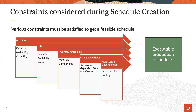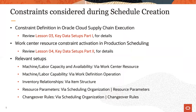Once all relevant constraints are respected, you will get an executable production schedule. Most of these constraints are managed via setup of work center resources, work definitions, and item structures in manufacturing work execution.